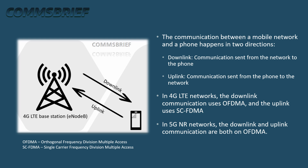The communication between a mobile network and a phone happens in two directions: uplink and downlink. Downlink is the communication sent from the network to the phone, and uplink is the communication sent from the phone to the network. In 4G LTE networks, the downlink uses OFDMA and the uplink uses SCFDMA. In 5G networks, both downlink and uplink communication use OFDMA.